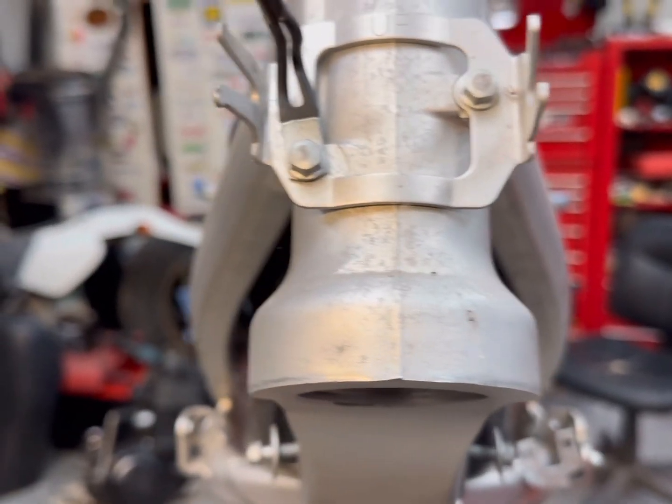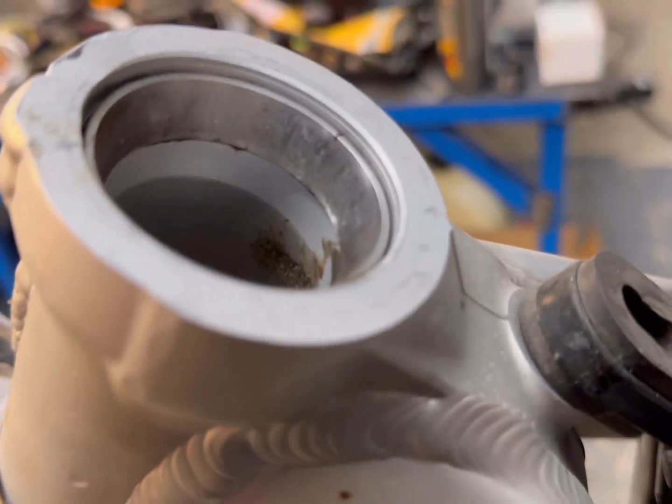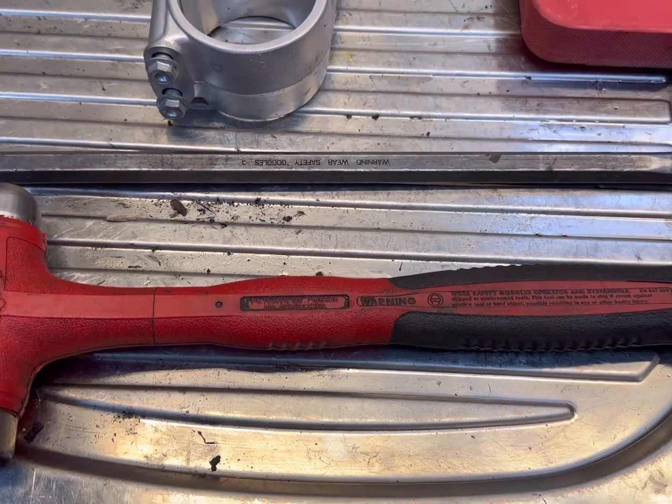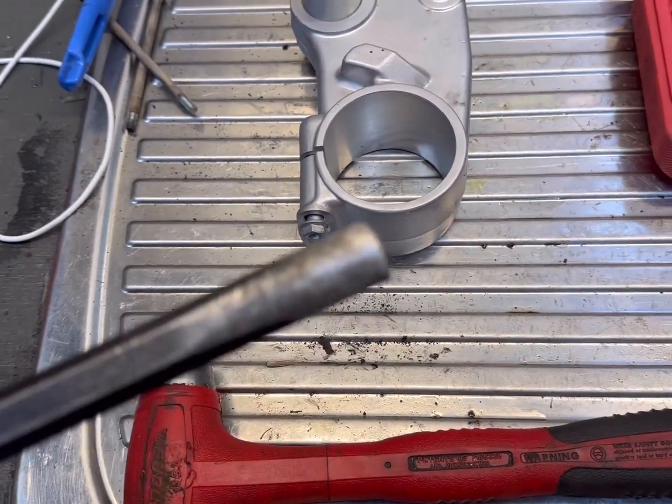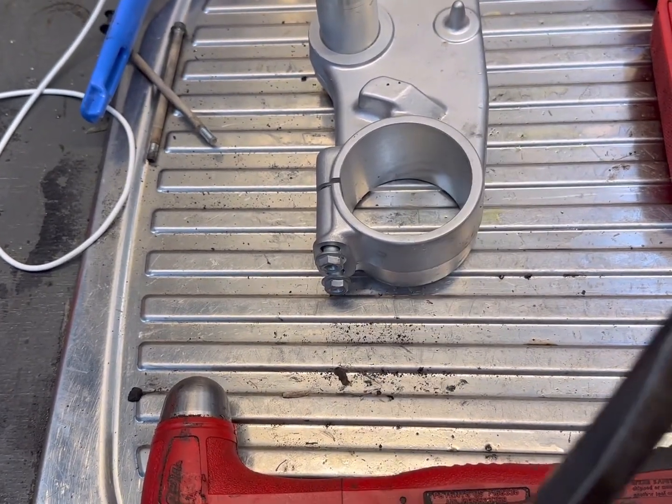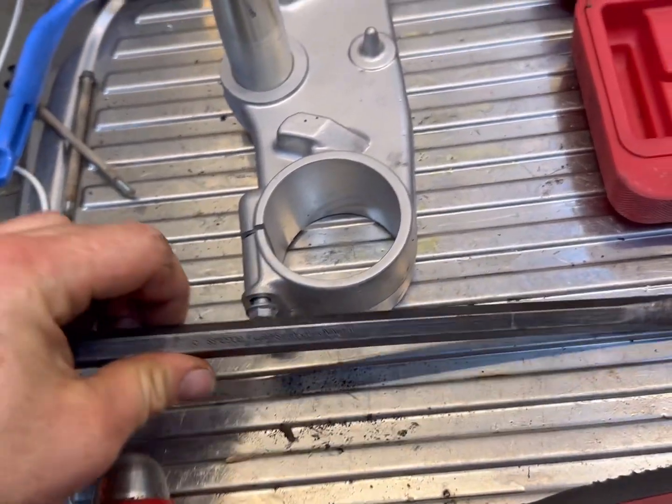Today we're doing a Serif 50R head stem bearing install. We've got the old racers still in here, so we're going to knock those out. What you'll need for that is a good ball peen hammer, dead blows really help, and a good bearing punch with a nice oval, sharp head on the end.